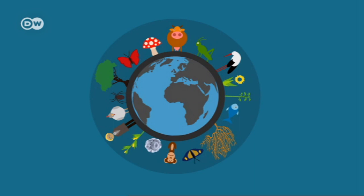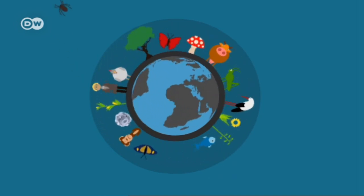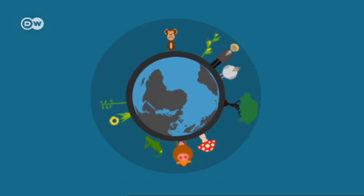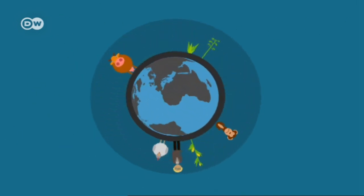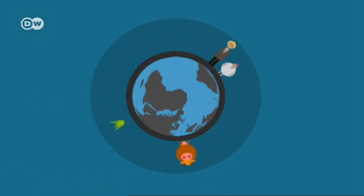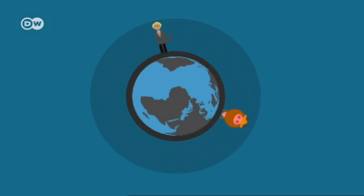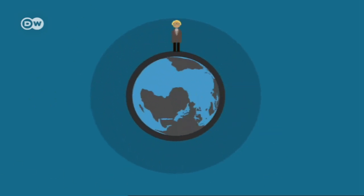Over the ages, many species have become extinct — to some extent that's a natural process. But currently around 130 species are being wiped out every day. At that pace, Earth could soon become a lifeless wasteland.